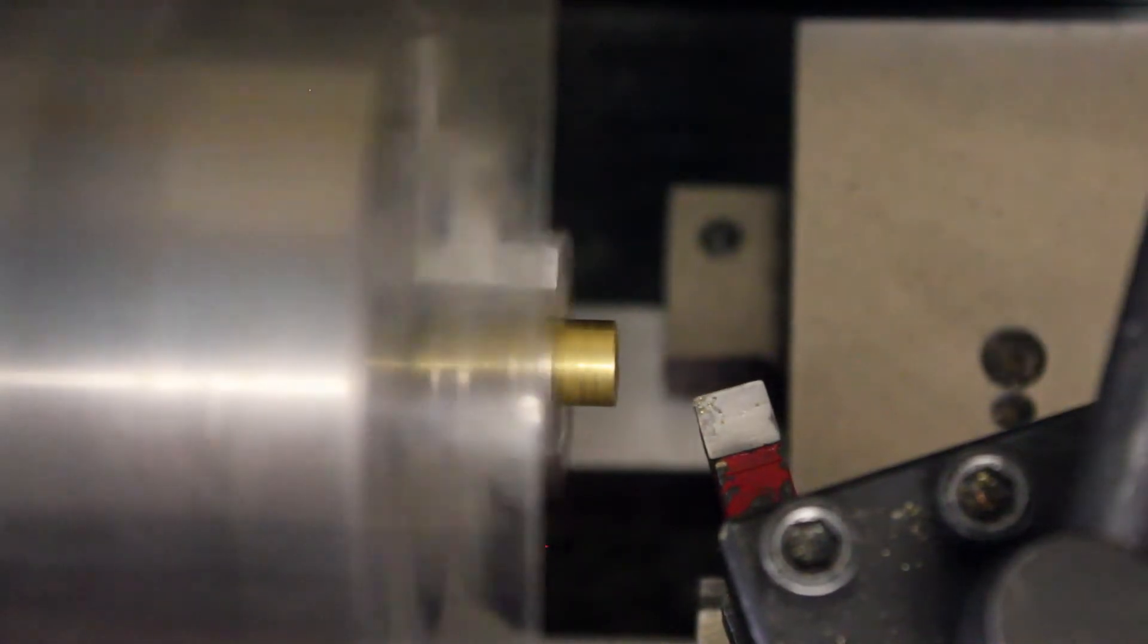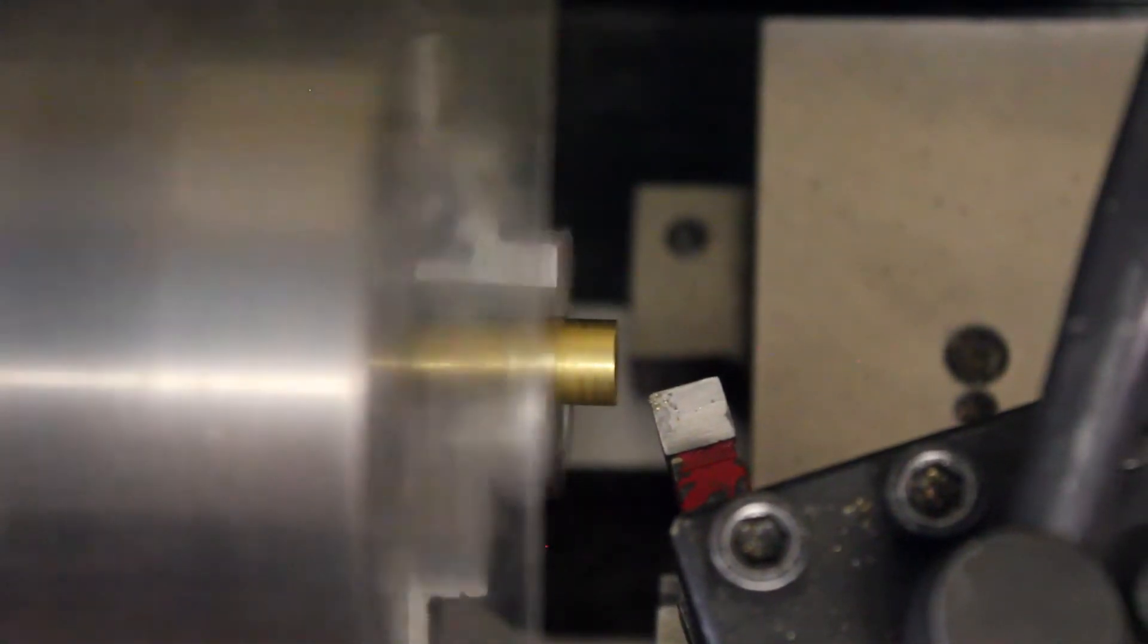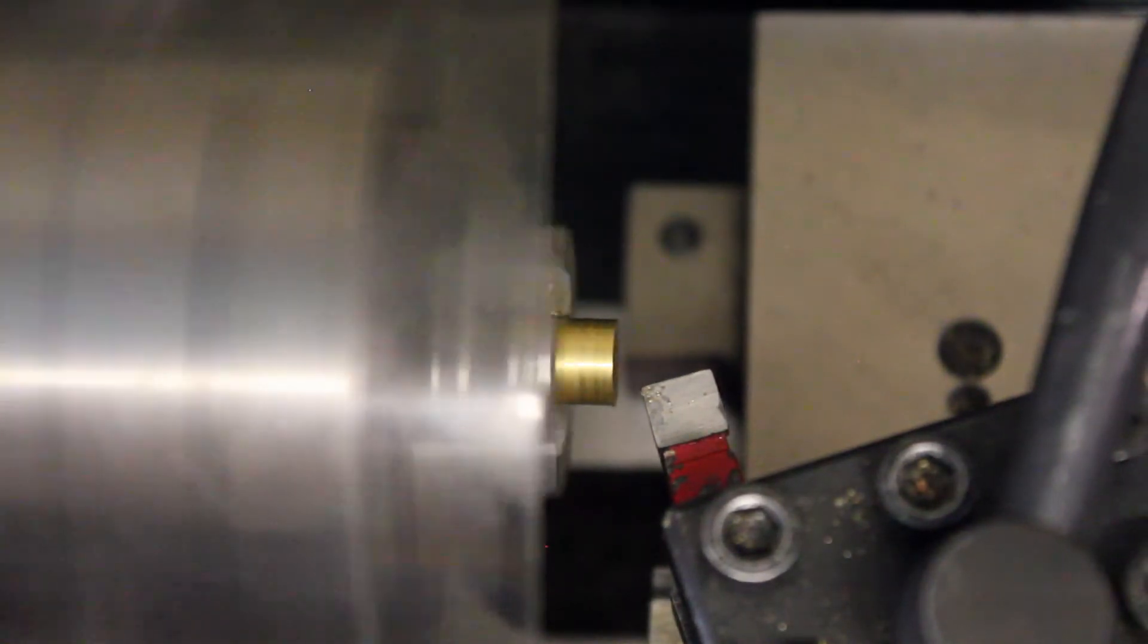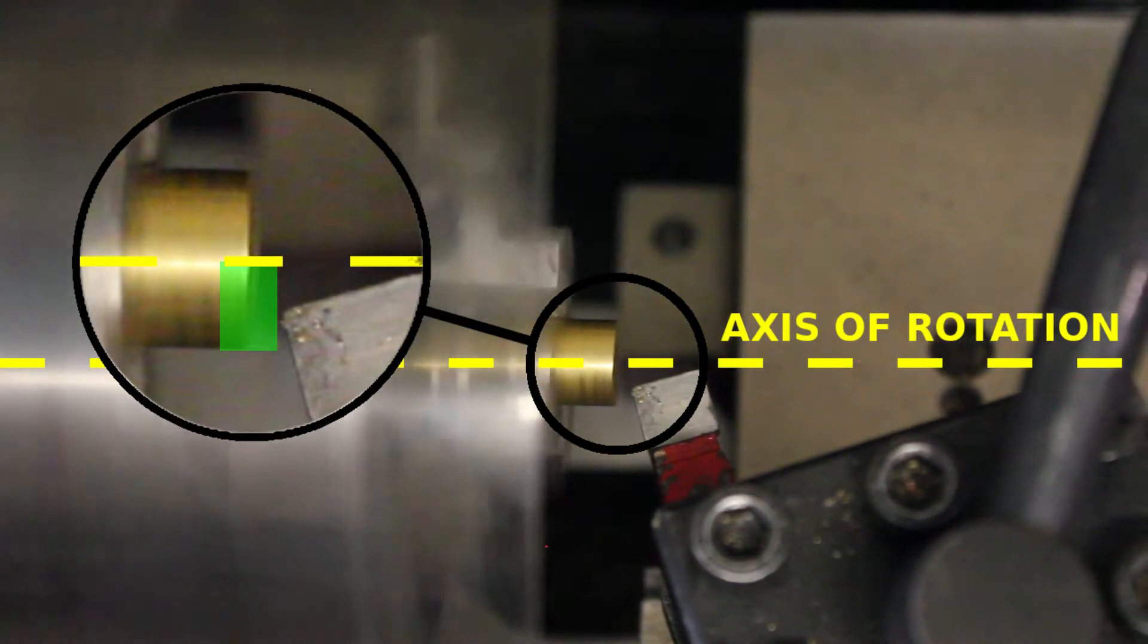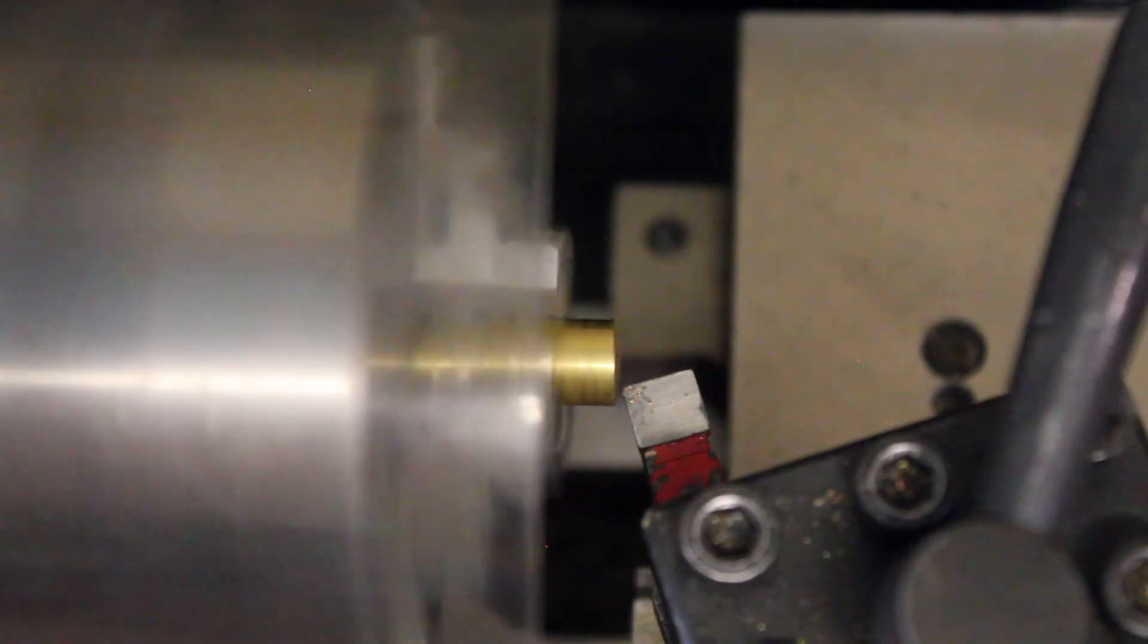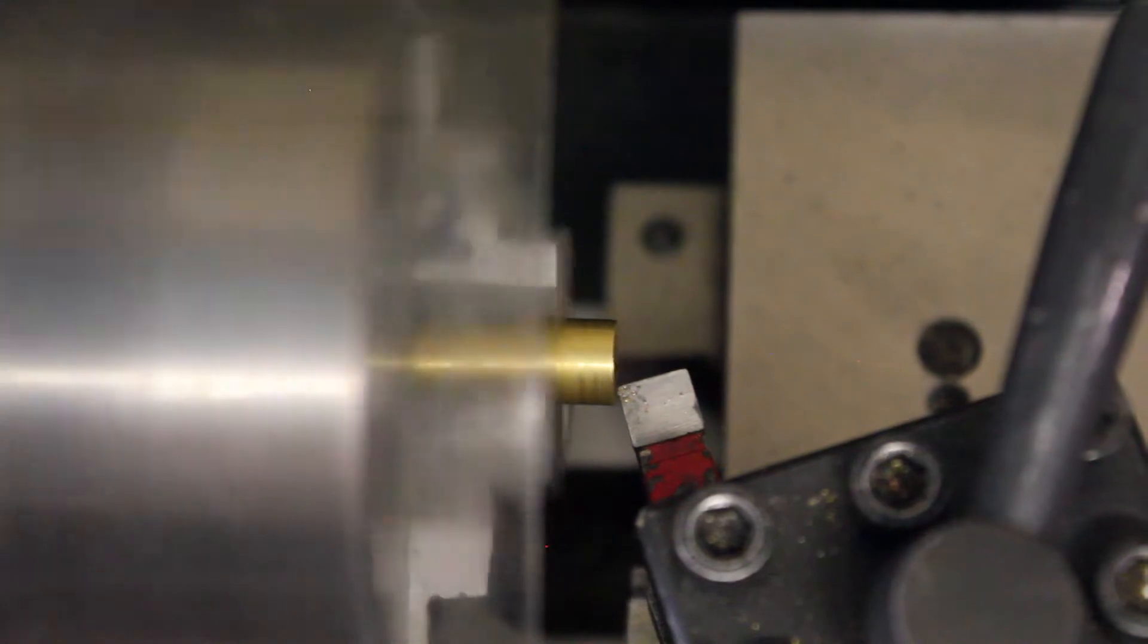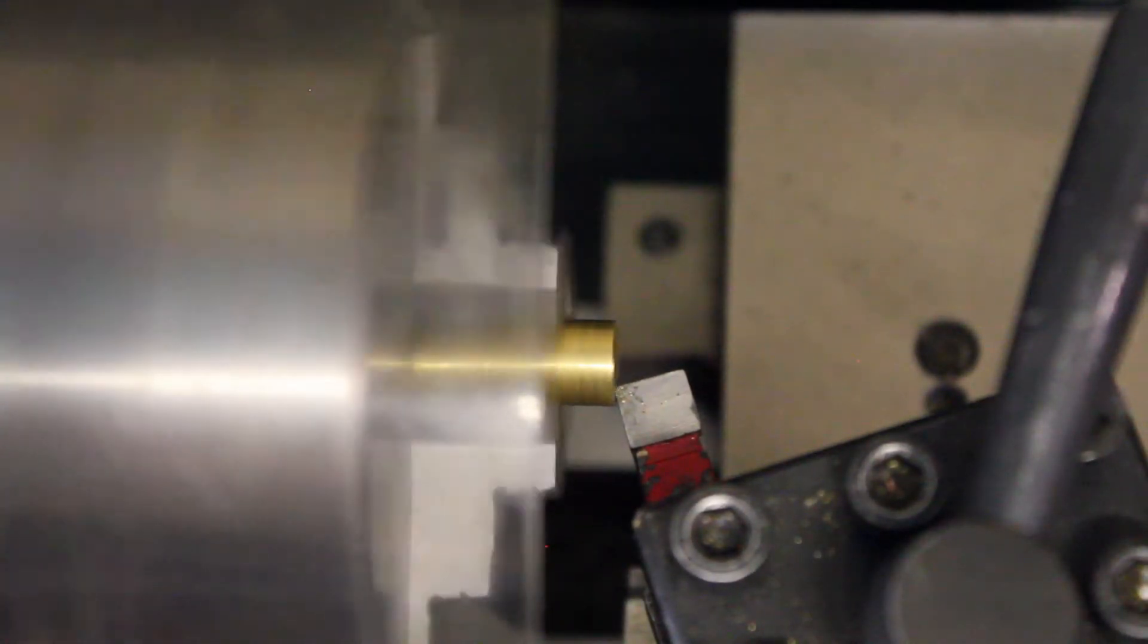Now using the knobs on the front of the lathe, you can position your tool post so that the cutting edge is on this side of the axis of rotation.